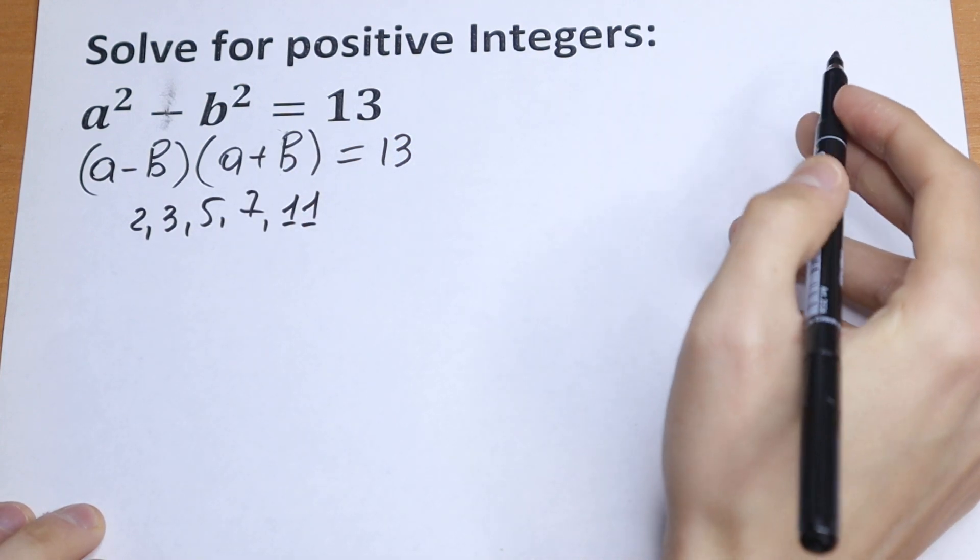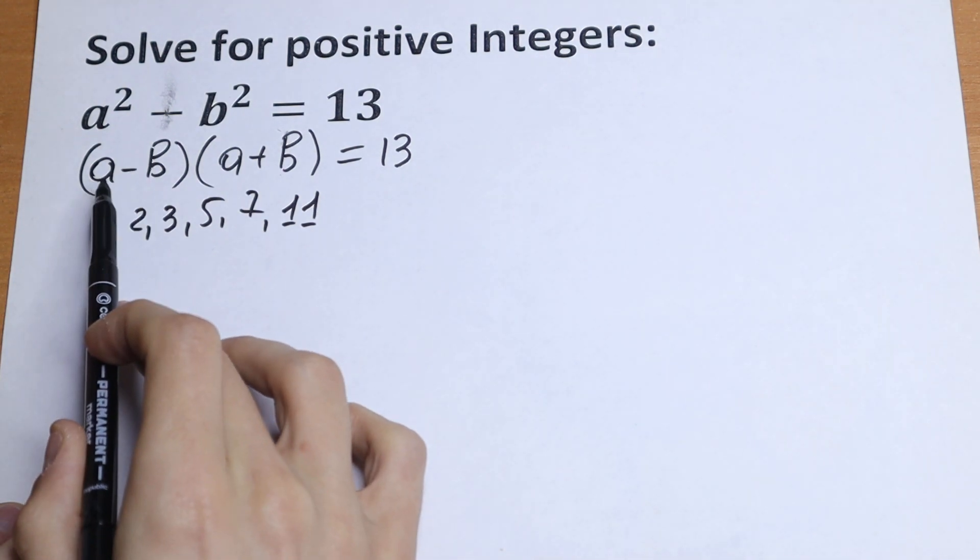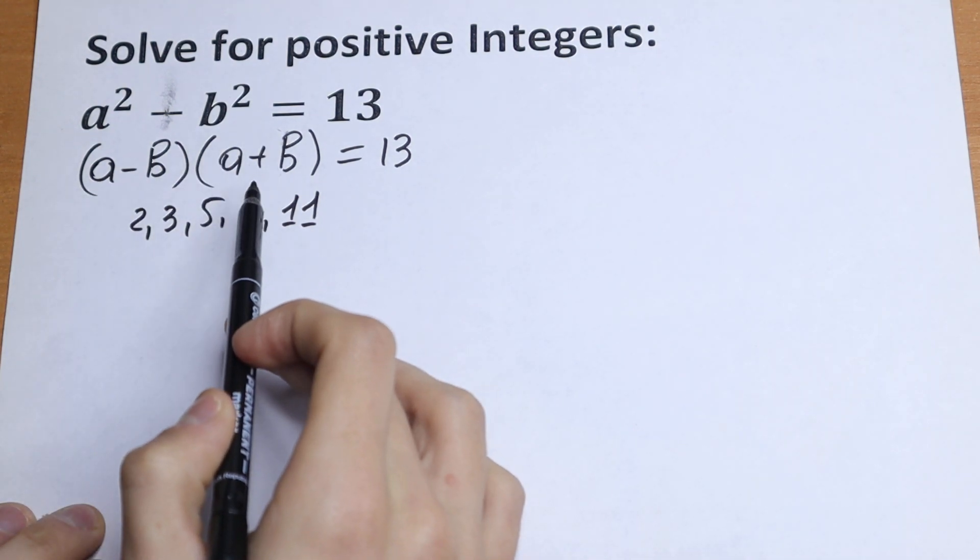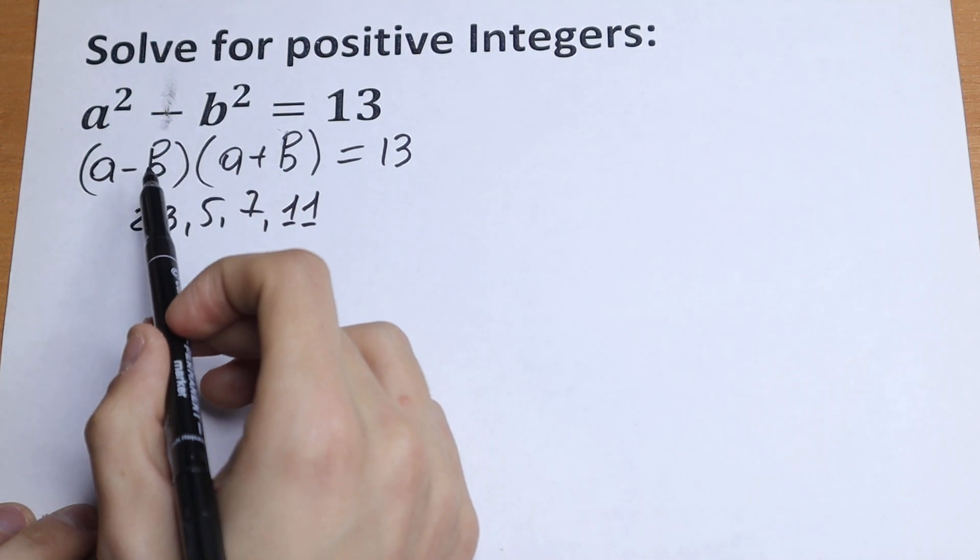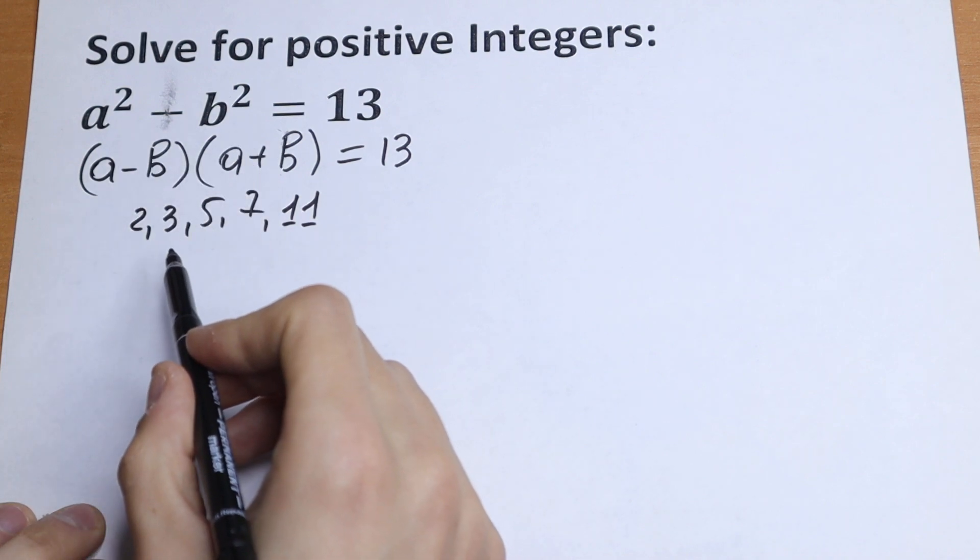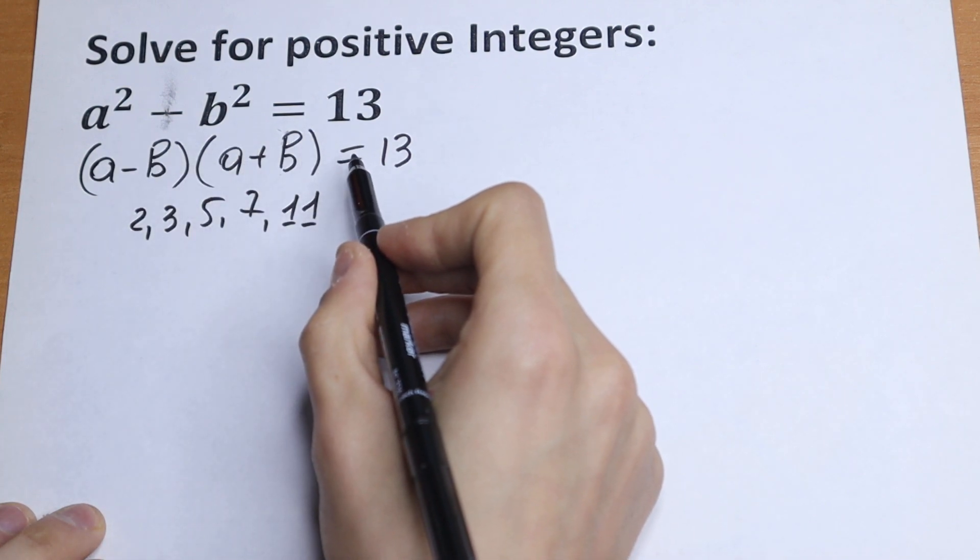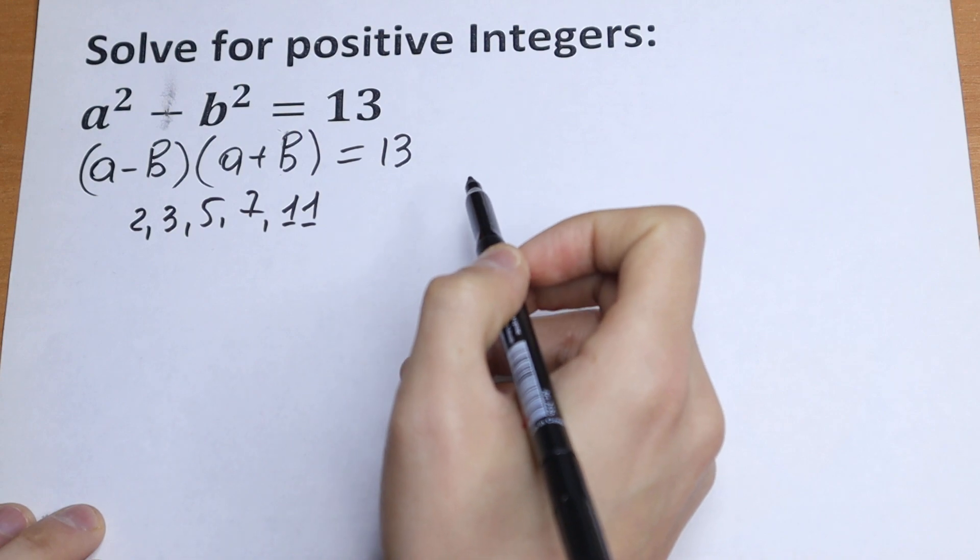So how can we get this number? We have the first number, a minus b, and the second number, a plus b. We need to combine these numbers and multiply them, and as a result, we need to get 13. How can we do this?